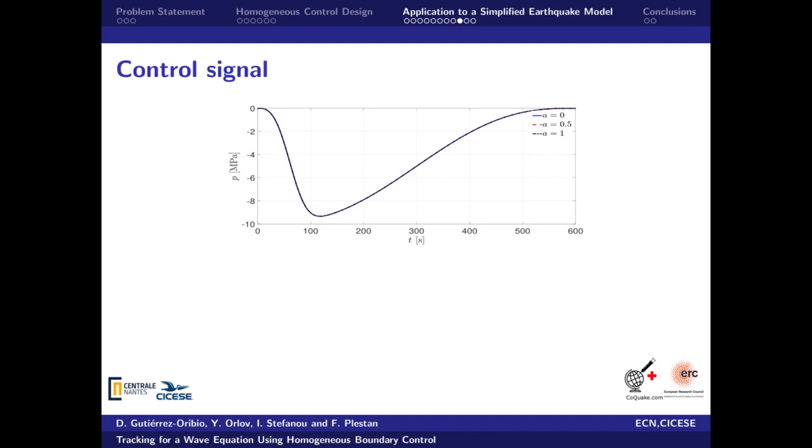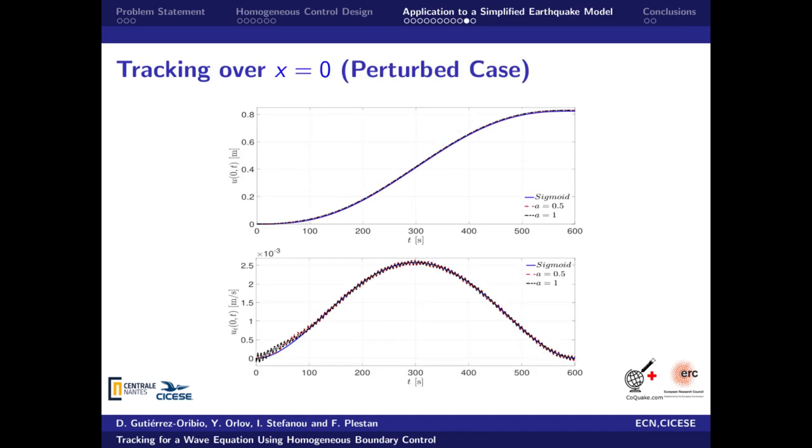To test the designed control even further, we will present a scenario in which the system exhibits uncertainties in the model and a sinusoidal perturbation matched to the control. In order to avoid the chattering effect, the discontinuous function sign for the case A equal to zero was changed to a sigmoid approximation.